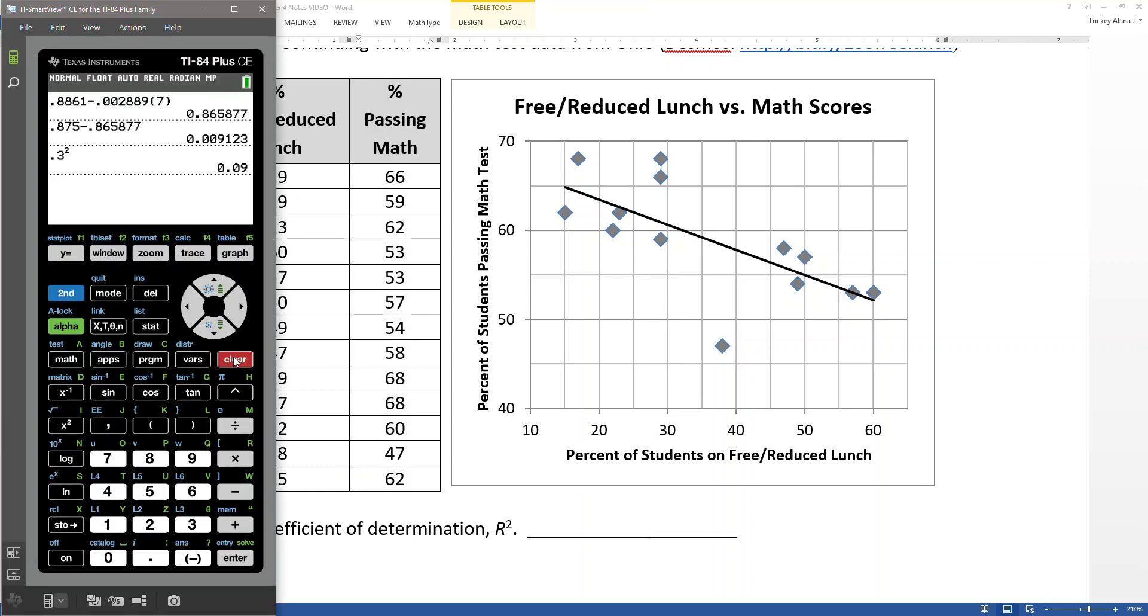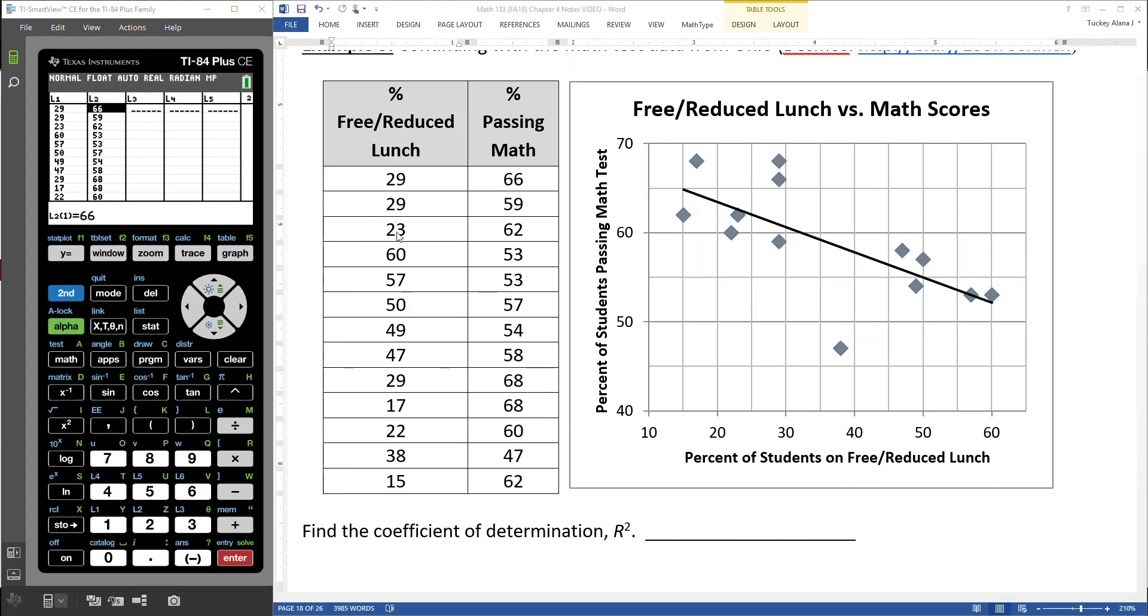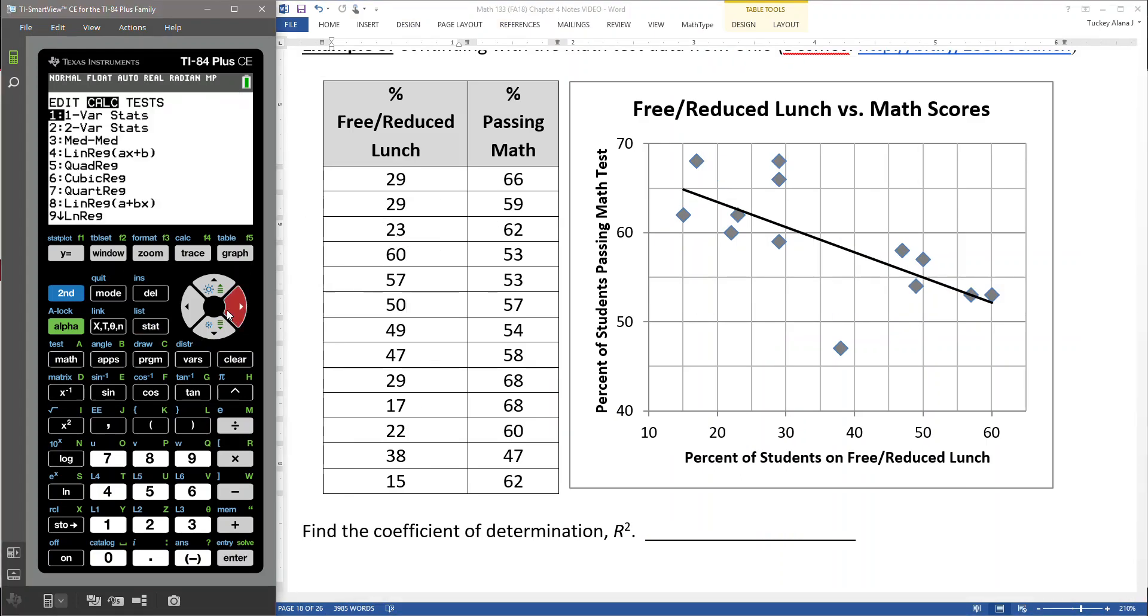So I'm going to grab my calculator, go to stat, go to edit. My data's already in there. Great. So the way to find the R-squared value is to run the linear regression function, just like we have before. So you're going to have X list as L1, Y list as L2. If you like, for whatever reason, you can store your regression equation. You don't have to, though. If you want to, you'd hit variables, go to the right to Y variables, number one function, number one. But again, this is not necessary. You don't have to do that part. You do have to do the X list and the Y list. Go down to calculate and press enter. And the R-squared value, you can see it's the third line or fourth line down. It says R-squared equals 0.473.